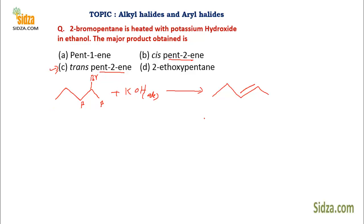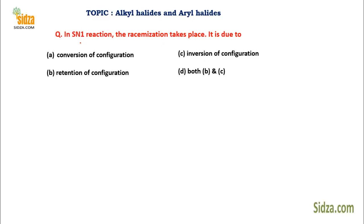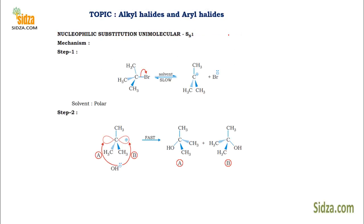In the SN1 reaction, racemization takes place. It is due to the inversion and retention of configuration. In the SN1 mechanism, this is a two-step process — the first step is always the formation of a carbocation.